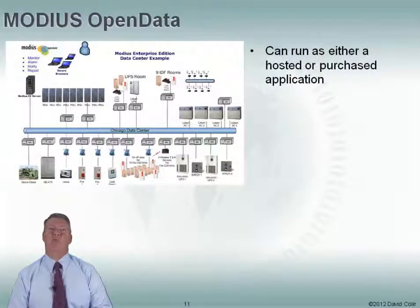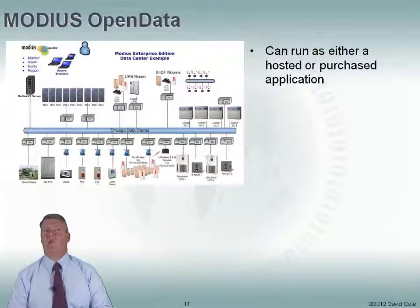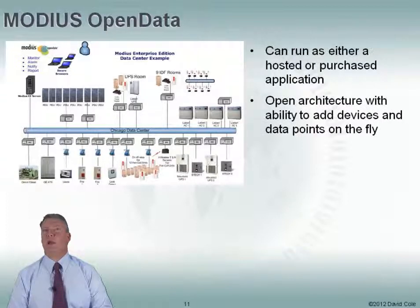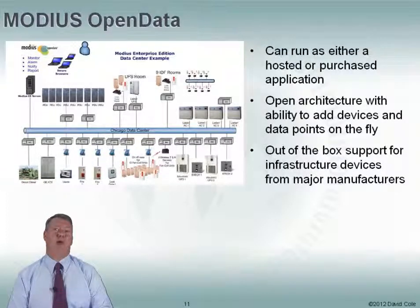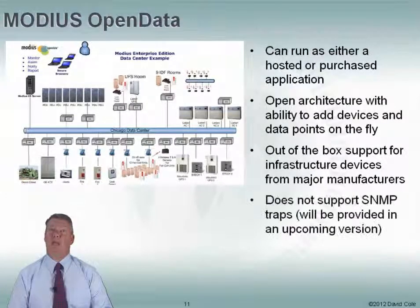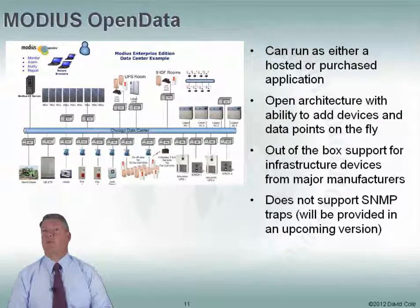Modius Open Data has a really nice backend architecture — it's a very scalable architecture. They do a lot of nice things for collecting data from various devices. They can run it as a hosted solution or as a purchased application. It's a very open architecture, so you have the ability to add devices and data points on the fly — probably a better job of that than anybody on the market. They do have out-of-the-box support for a lot of infrastructure devices from major manufacturers, but you can also add your own. It doesn't currently support SNMP traps, but that is going to be provided in an upcoming release.